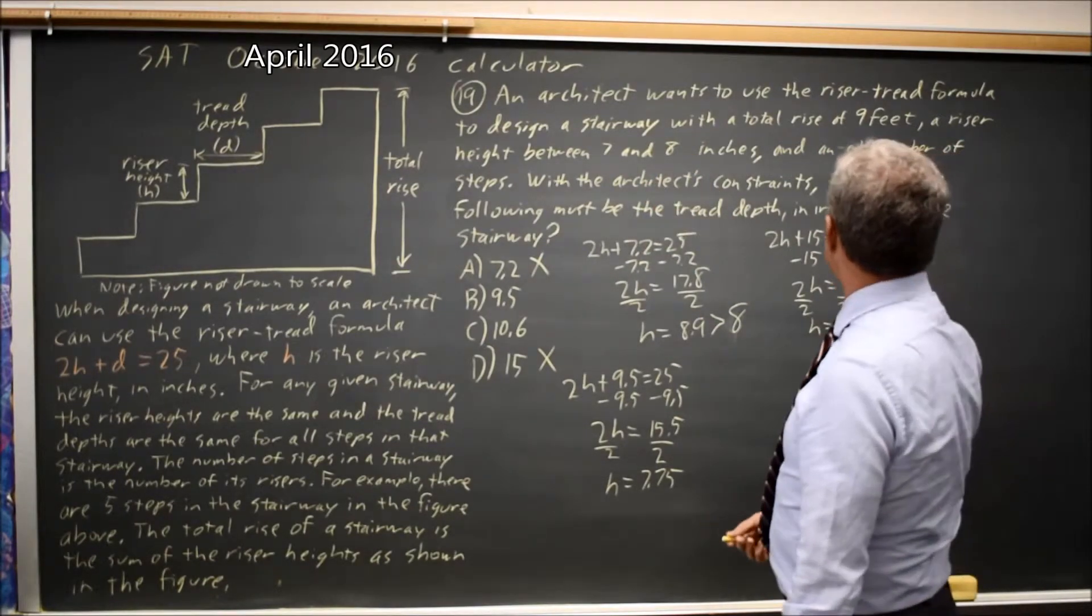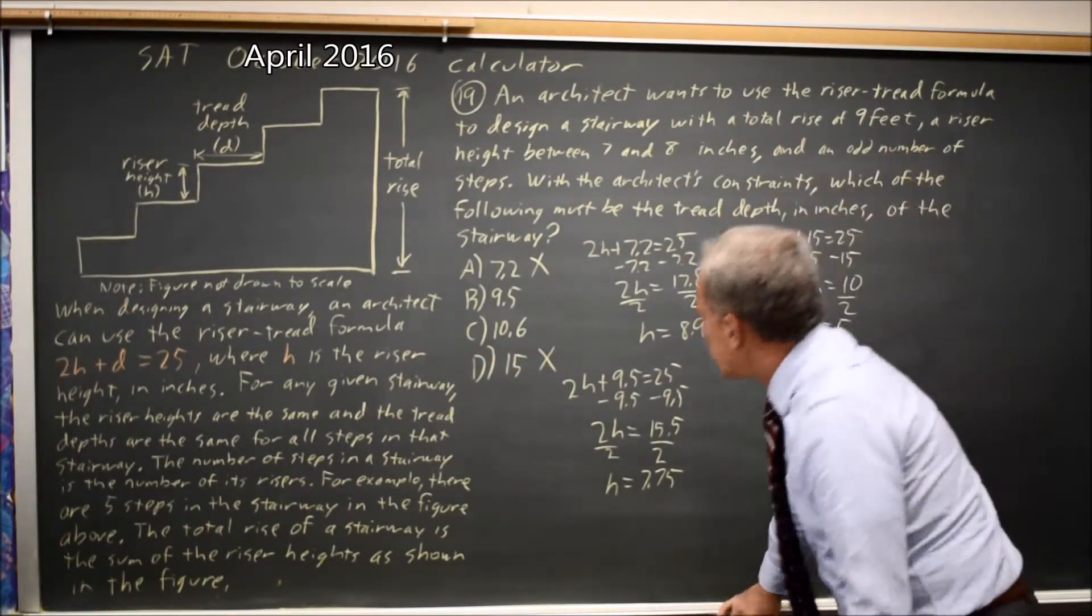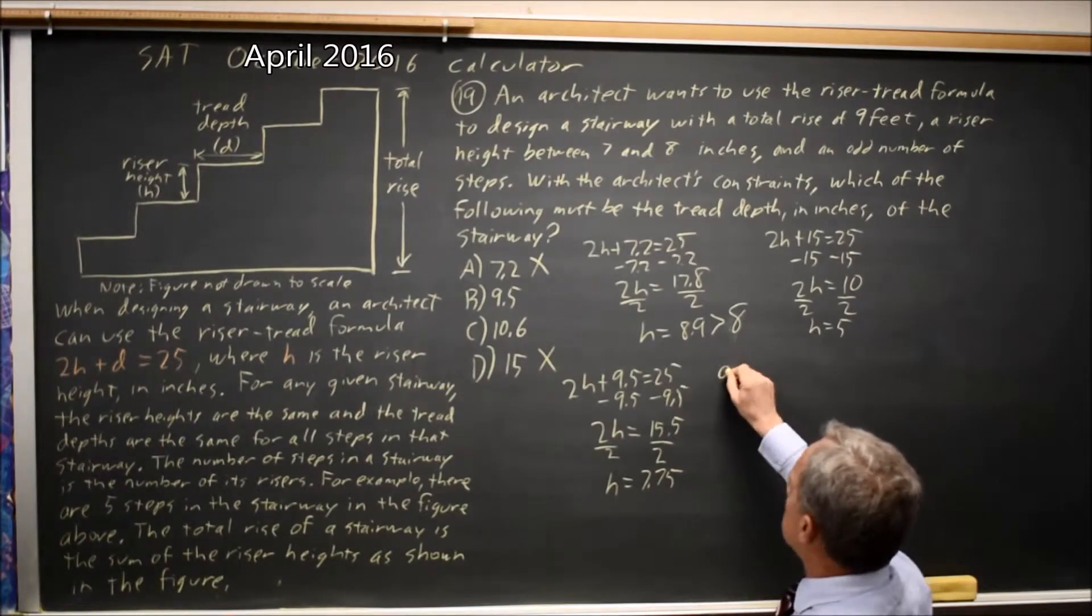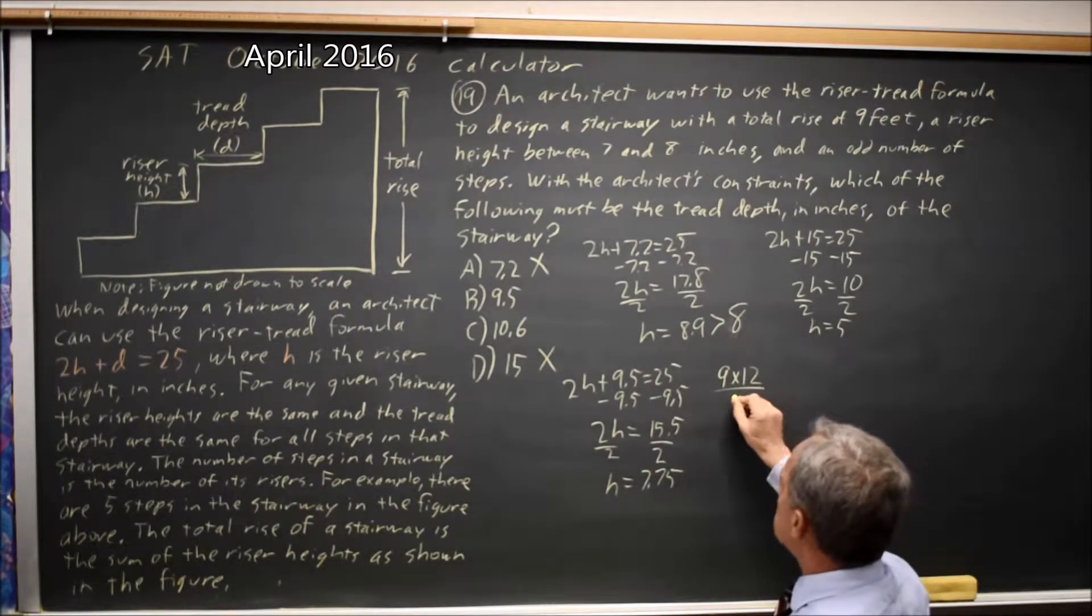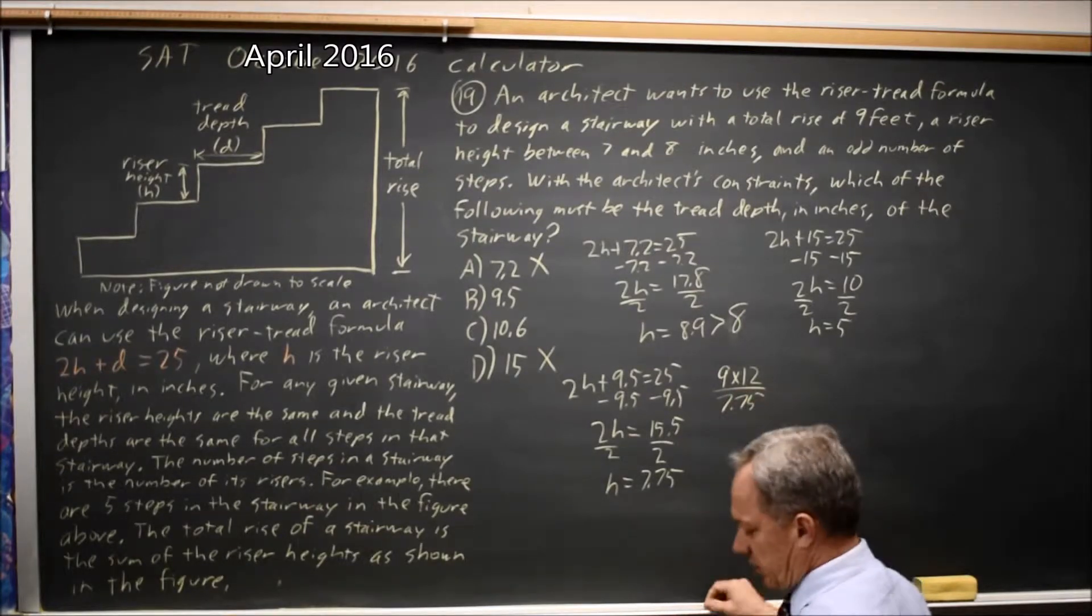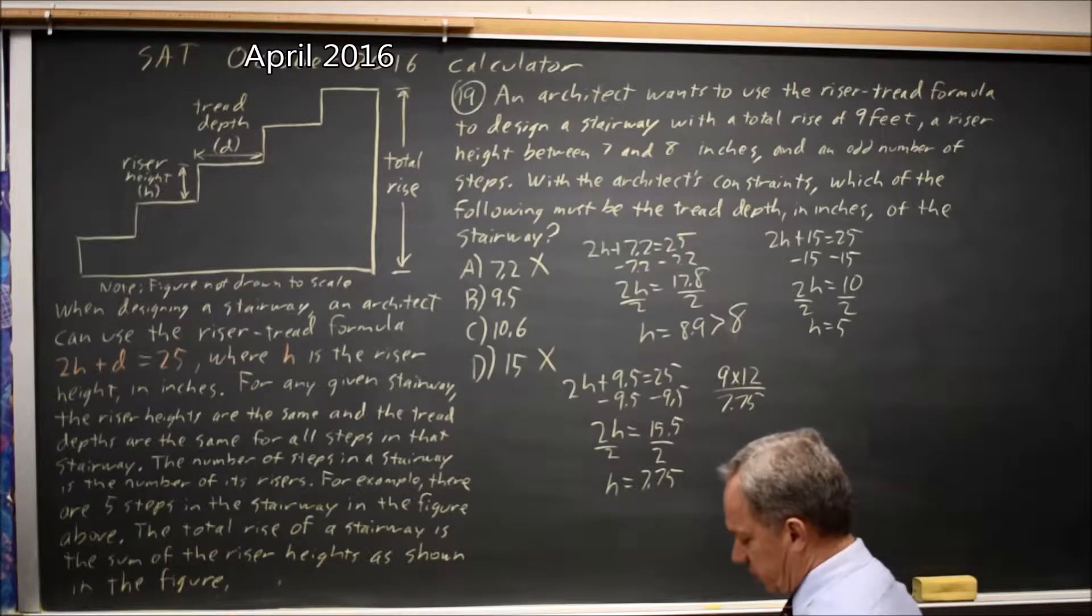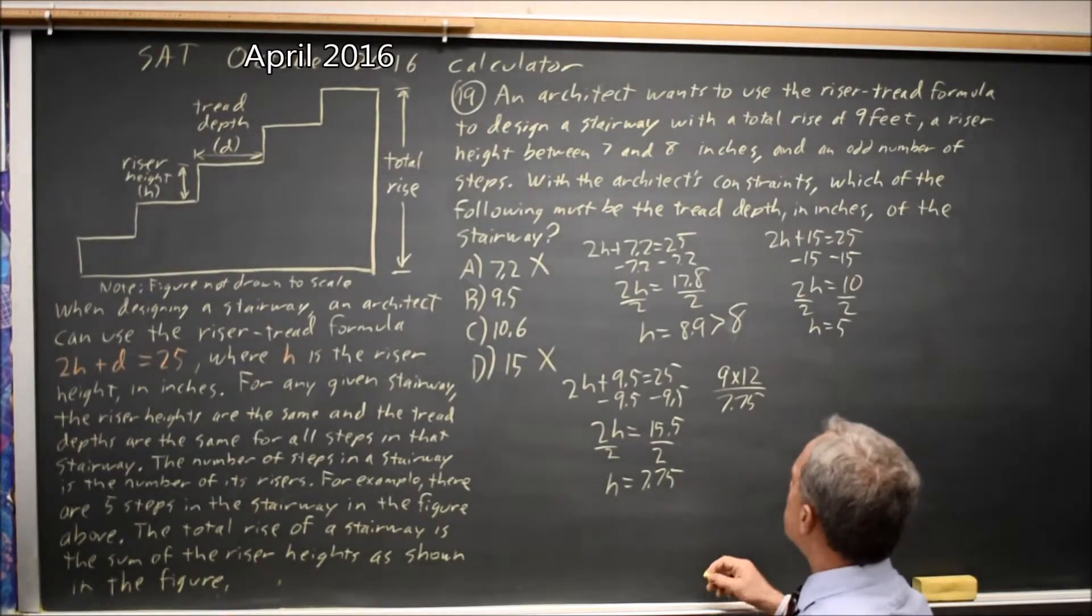But we also want an odd number of steps. So let's take the total rise, which is 9 feet converted to inches. 9 times 12 would be the number of inches, divided by 7.75. 9 times 12 divided by 7.75 is 13.94.